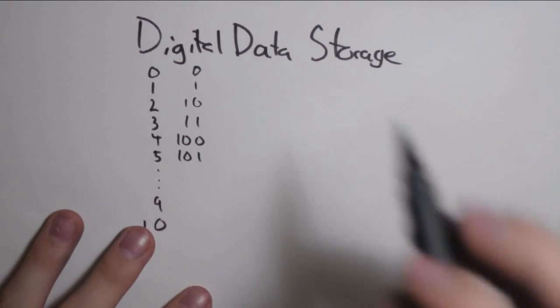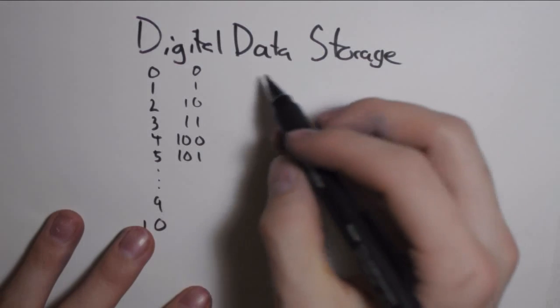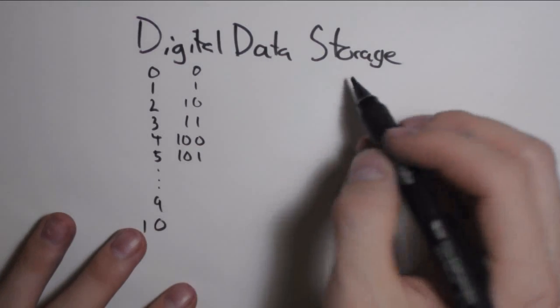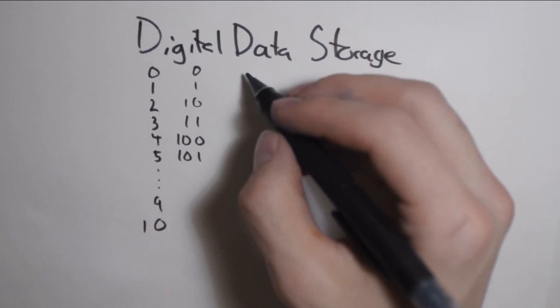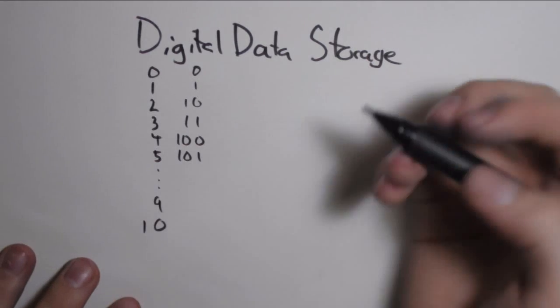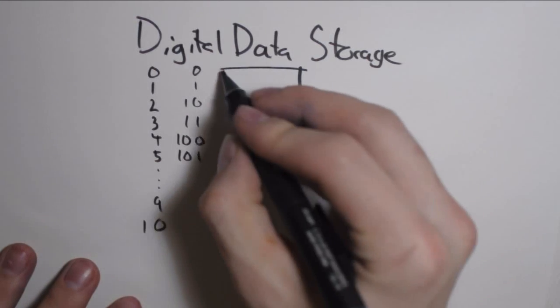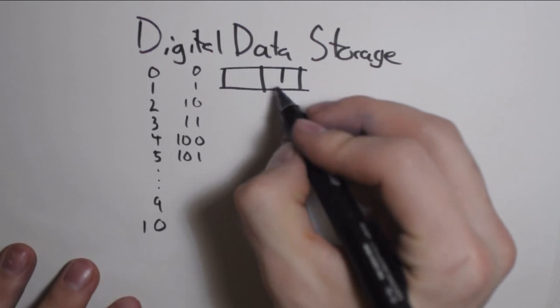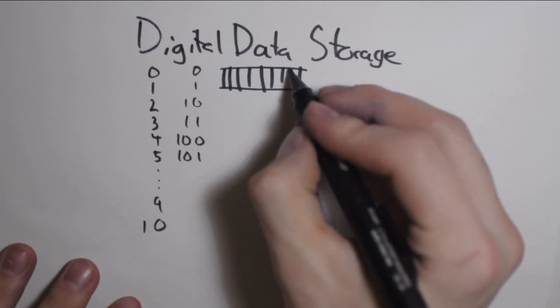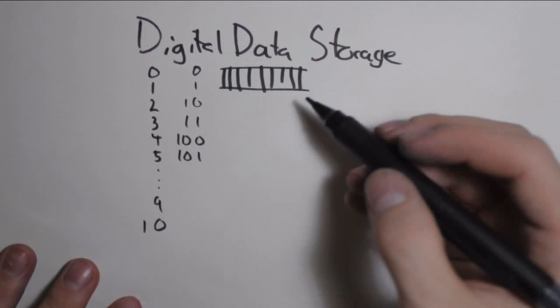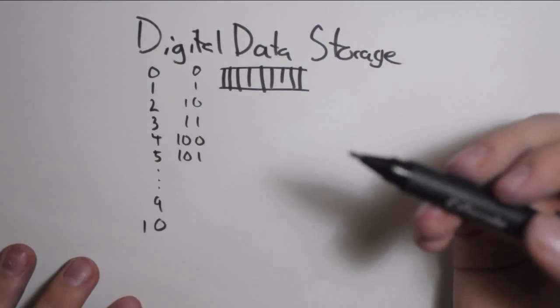All digital data, or almost all digital data, is stored in terms of bytes. Bytes are sequences of 8 bits and a bit is a 1 or a 0. So 1 byte is 8 1s or 0s, and that's basically how you store everything on a computer.